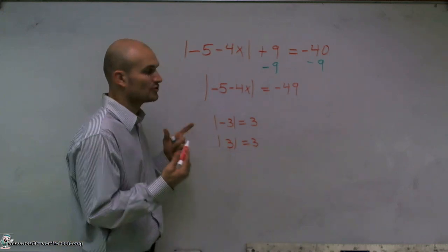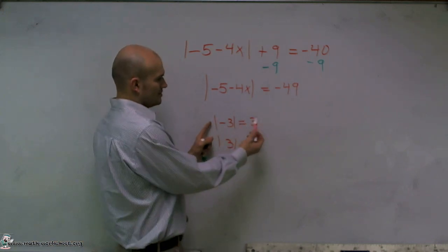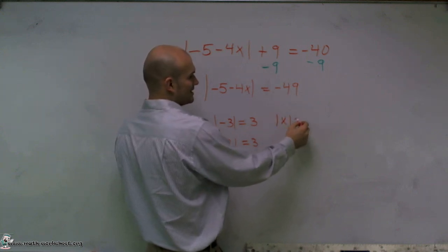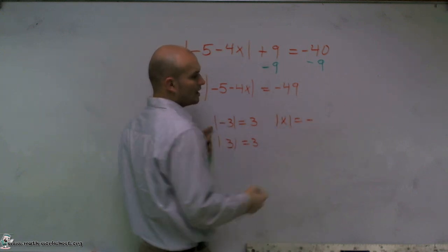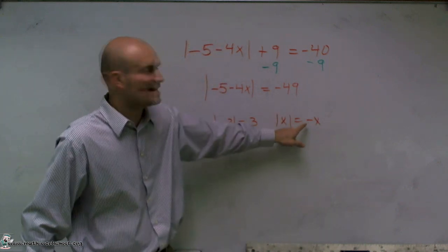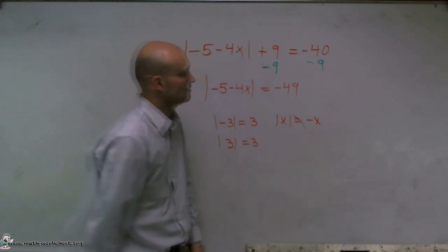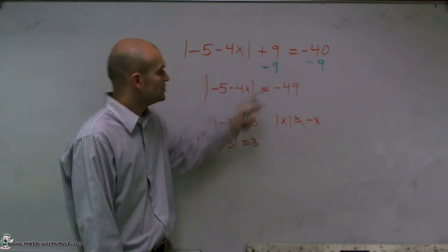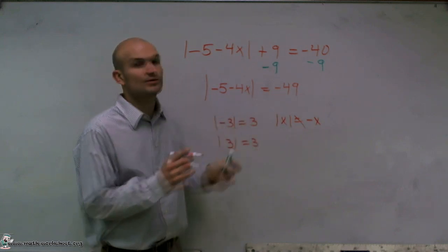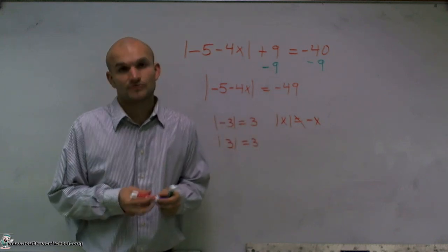And again, I'll remind you, the reason why is you can't have, there's no such thing as an absolute value of anything equaling a negative number. Absolute value of x is never going to equal negative x. So you cannot have this equal to a negative number. So if you get this case, just make sure you know that there's not going to be a solution for the problem.